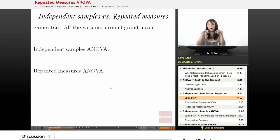So let's talk about the independent samples ANOVA versus the repeated measures ANOVA. They both have the same start. They have the same hypothesis. Not only that, but they both have the same idea of taking all the variance in our sample and then breaking it down into component parts.